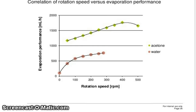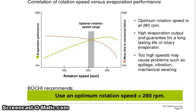Correlation of rotation speed versus evaporation performance — evaporation performance in milliliters per hour versus rotation speed, shown for acetone and water. The optimum rotation speed is at 280 RPM, giving high evaporation output and guaranteeing a long-lasting life of the rotary evaporator. Too high a speed may cause problems such as spillage, vibrations, and mechanical bearing wear. Use the optimum rotation speed of 280 RPM.